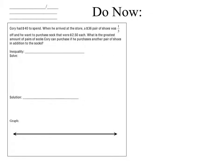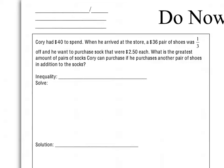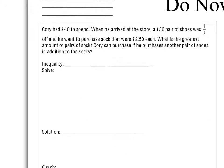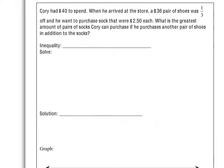Looking at our do now — it's a problem very similar to one from yesterday's test that a lot of people struggled with. I've also added a couple pieces that weren't on the original problem. It says: Corey had $40 to spend when he arrived at the store. A $36 pair of shoes was one third off, and he wanted to purchase socks that were $2.50 each. What is the greatest number of pairs of socks he can purchase if he also buys the pair of shoes?